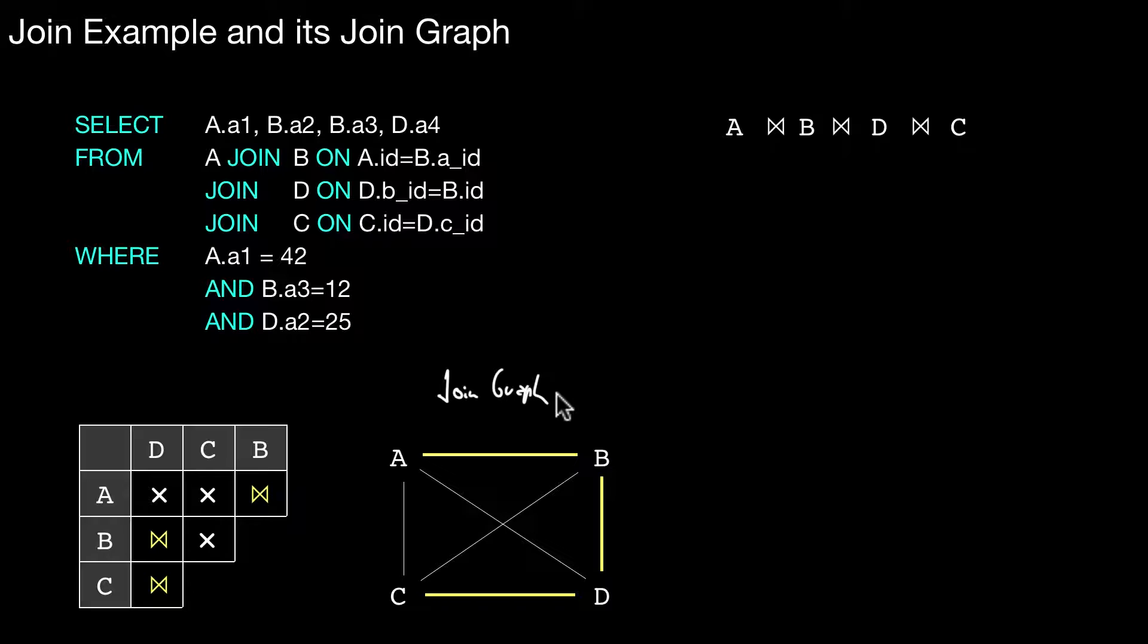In a join graph, every table becomes a node. And then you draw edges among those nodes. You draw a yellow edge if you have a join condition specified. As we see here, we have the join condition. So we have three join conditions here. Therefore, we have to draw three edges. Three yellow thick edges here between A and B, B and D, D and C.